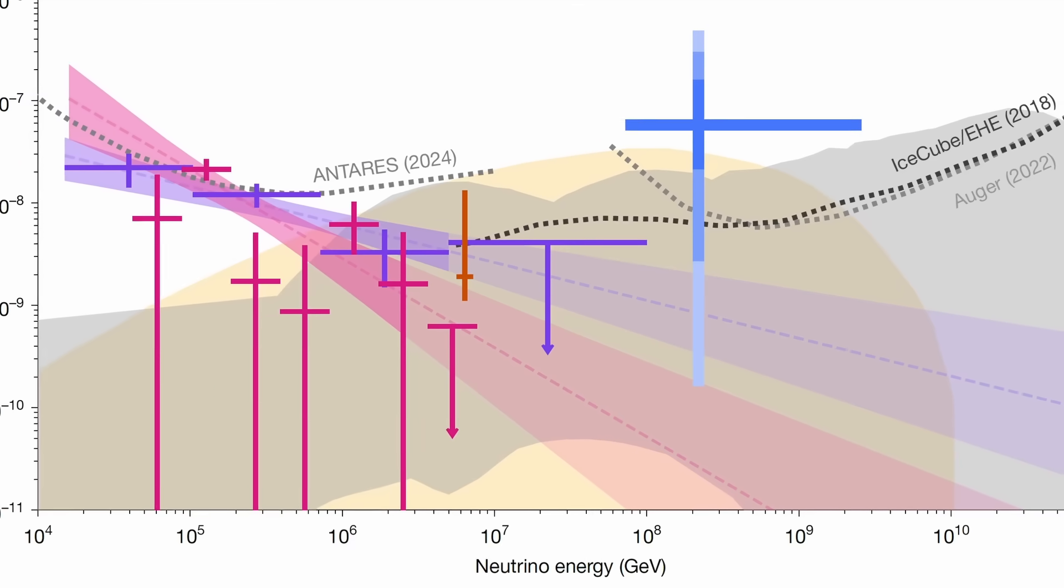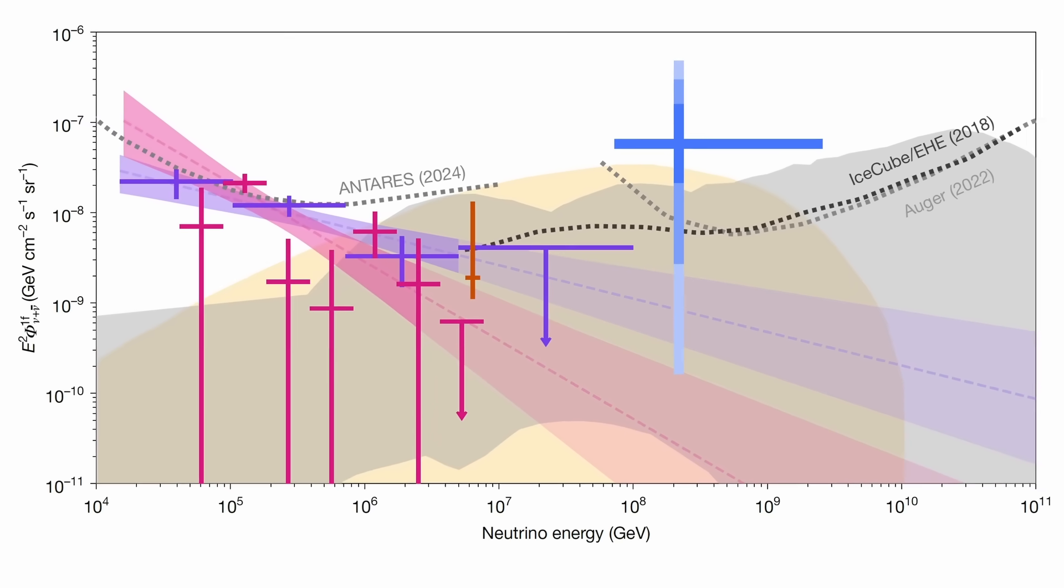It's called peta because it's the fifth power of 1000 and someone forgot that penta has an N. That makes it the most energetic neutrino ever detected.